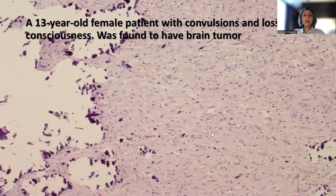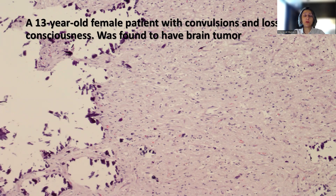This is a 13-year-old female patient who presented with convulsions — and this is a typical presentation — and loss of consciousness, and was found to have a brain tumor. The location of the brain tumor was in the right temporal lobe.